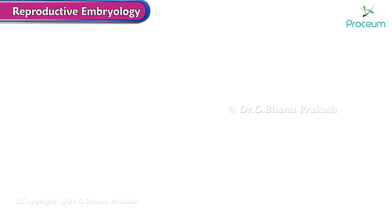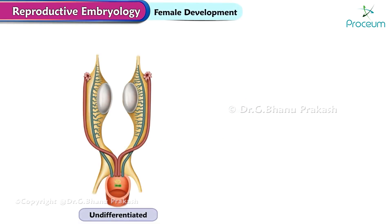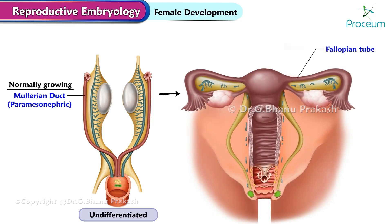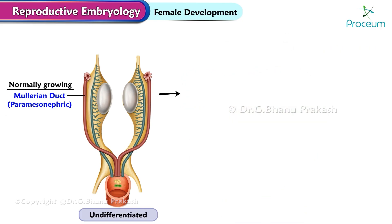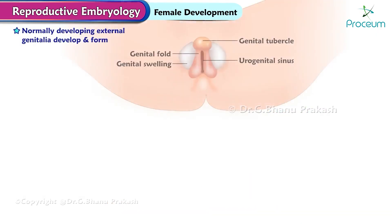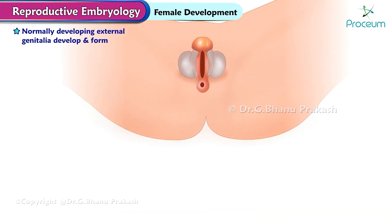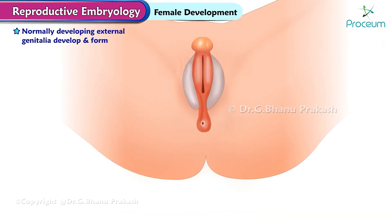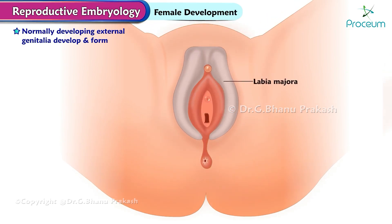Reproductive embryology - female development. The normally growing Müllerian duct grows and forms the fallopian tube, uterus, cervix, and upper two-thirds of the vagina. The normally regressing Wolffian duct regresses; its remnant is the epoophoron and Gartner's duct. The normally developing external genitalia develop and form the labia majora, labia minora, and clitoris.